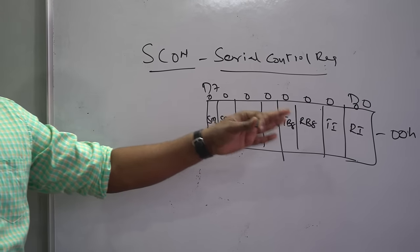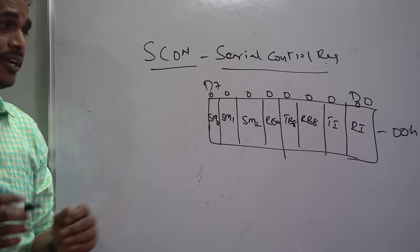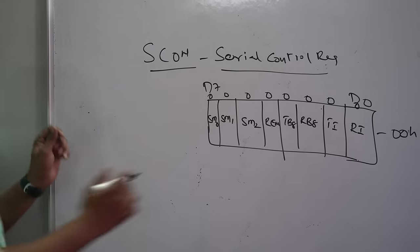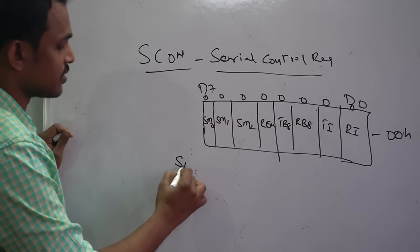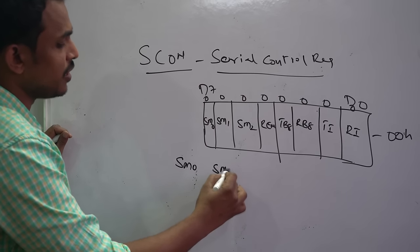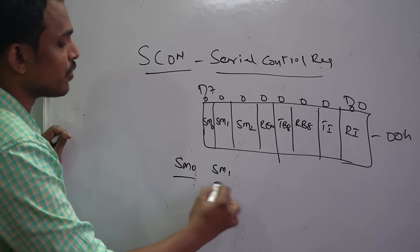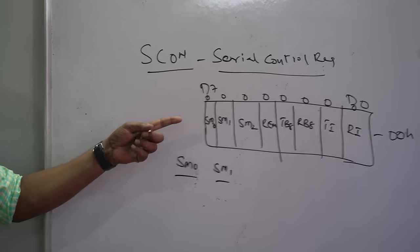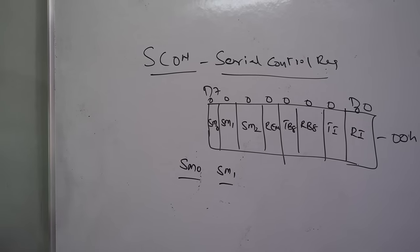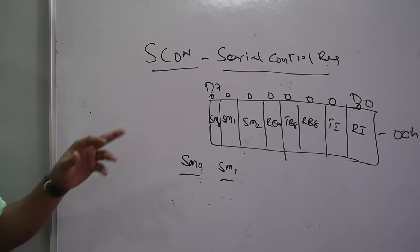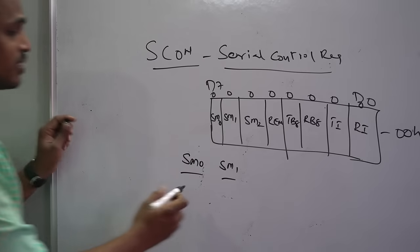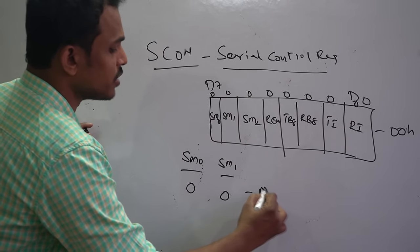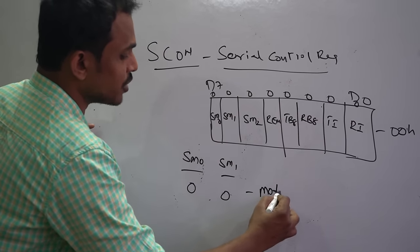The default hexadecimal value of the SCON register is 00H. The bits SM0 and SM1 are used for mode selection — programming these two bits defines the microcontroller's serial communication mode. When SM0 and SM1 are both 0 (00), it selects Mode 0.